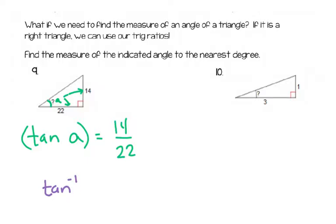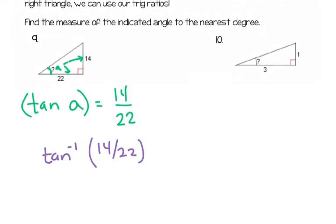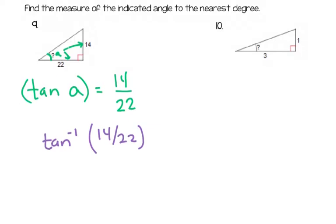This is called the inverse tangent, but it's for when you don't know the angle. So if I don't know the angle, what I would do is tangent negative 1 of 14 divided by 22. And what that tells the calculator is, tell me what angle has a tangent of 14 over 22.